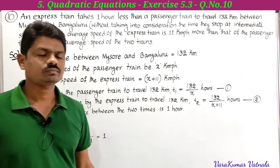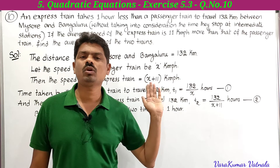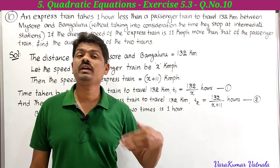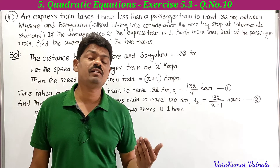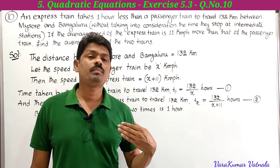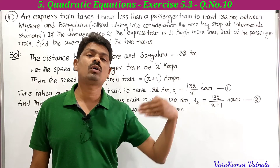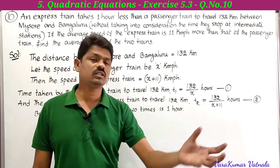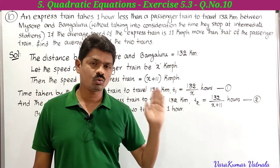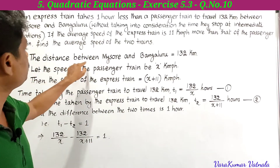The distance between the two places, Mysore and Bangalore, is 132 kilometers. The speed of the express train is 11 kmph more than the passenger train. The express train takes one hour less than the passenger train to cover 132 kilometers. We need to find the average speeds of the two trains.